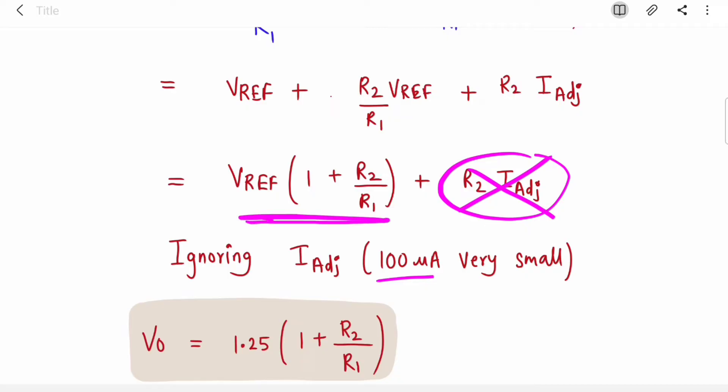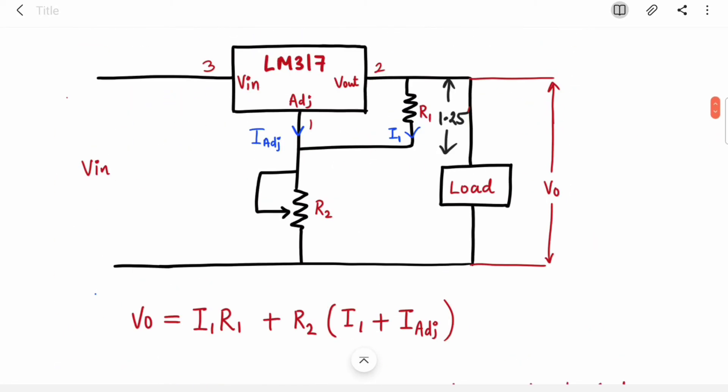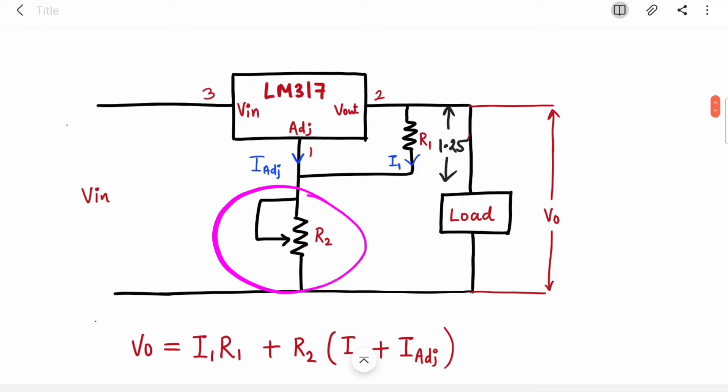Vo = 1.25·(1 + R2/R1), where I substituted V_ref as 1.25. This is your output equation. In this equation, R2 is playing a crucial role in deciding your output voltage. R1 is a fixed resistor, so as you vary the R2 potentiometer, the output voltage will change.